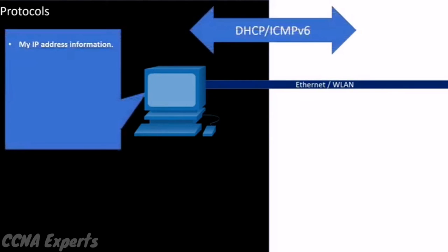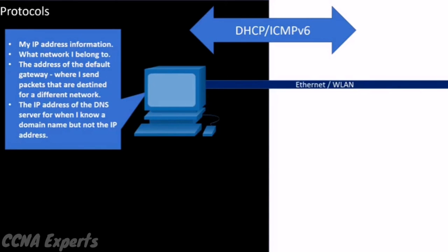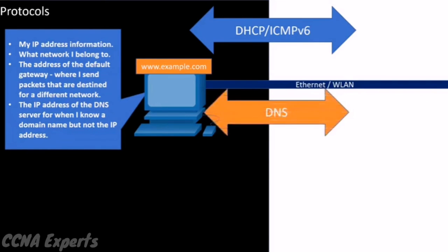The protocols DHCP and ICMPv6 provide IP addressing information, including the IP address that tells the device what network it belongs to, the address of the default gateway that tells the device where to send packets destined for another network, and the address of the DNS server for when a device knows the domain name of a destination but needs its IP address. For instance, when a user requests a web page such as www.example.com, the device asks the DNS server for the IP address of that domain name.